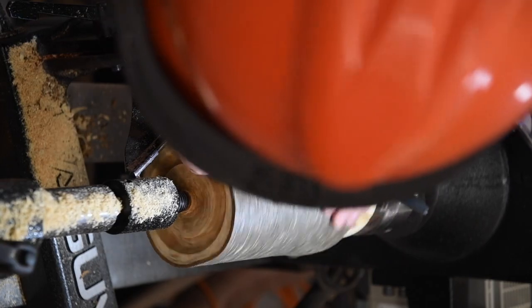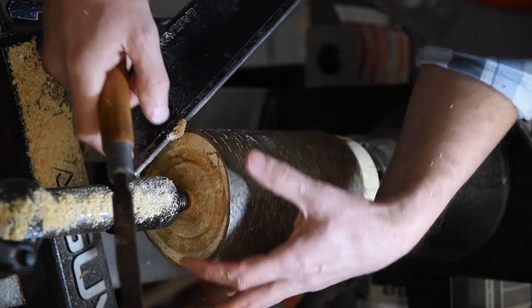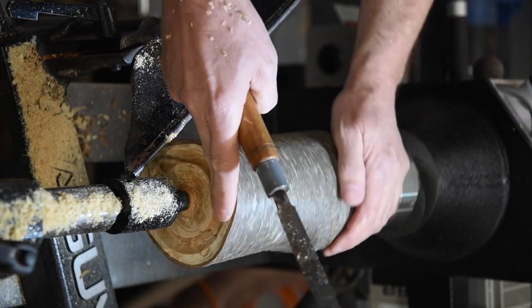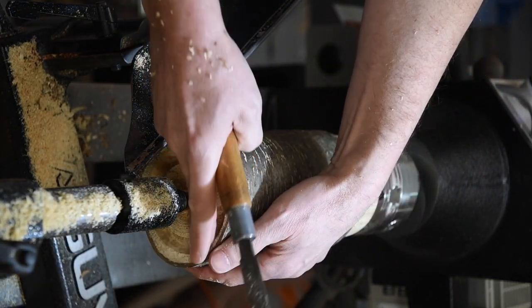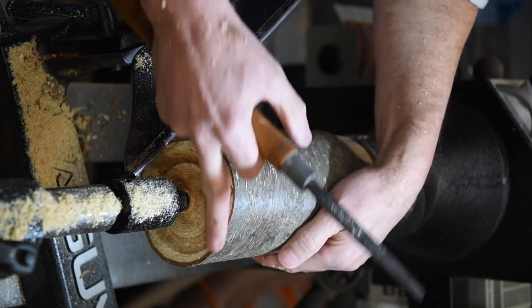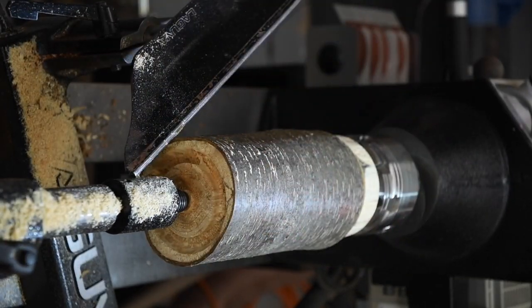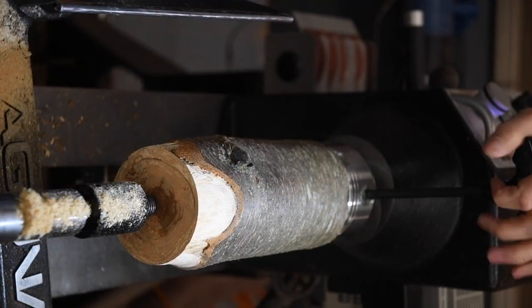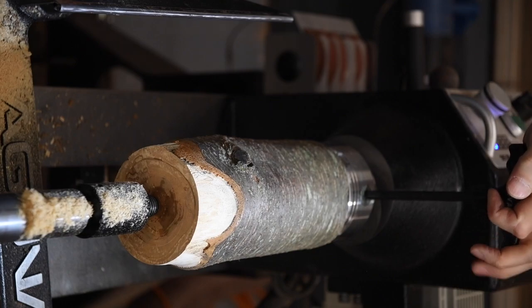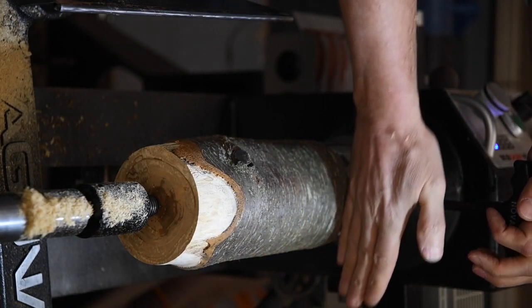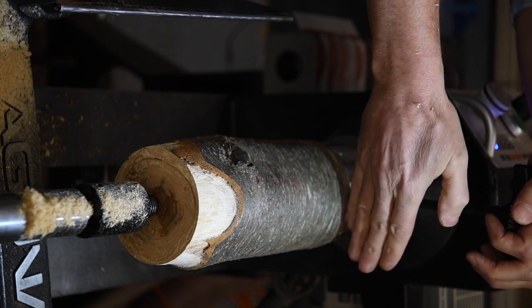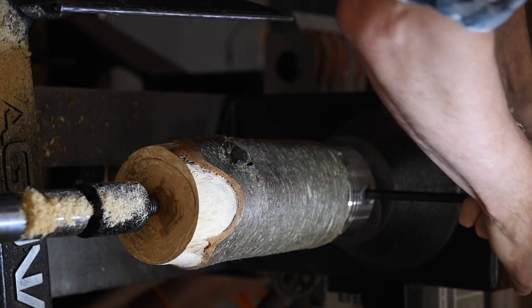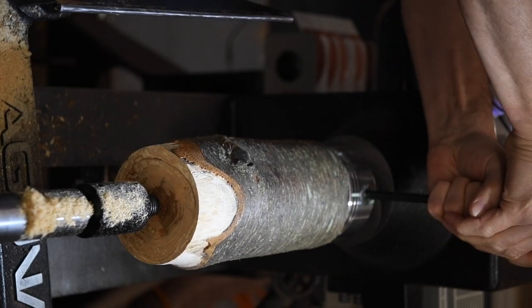Take a look at it. Now I have enough room for the chuck to grab onto it and it'll sit nice and flat on a table. We're ready to flip it around. So I'm using the tail stock to push the block of wood so it gets a good strong registration, and then I tighten it down.